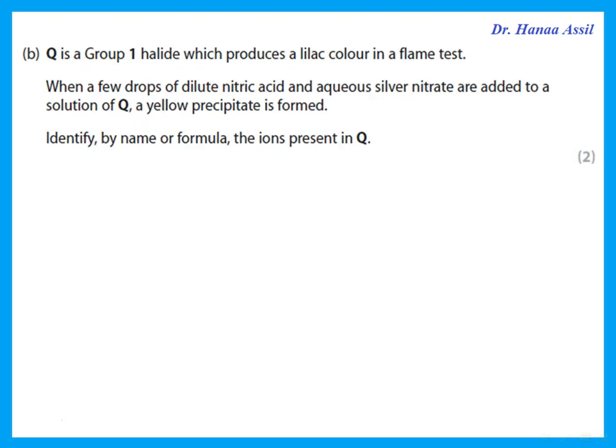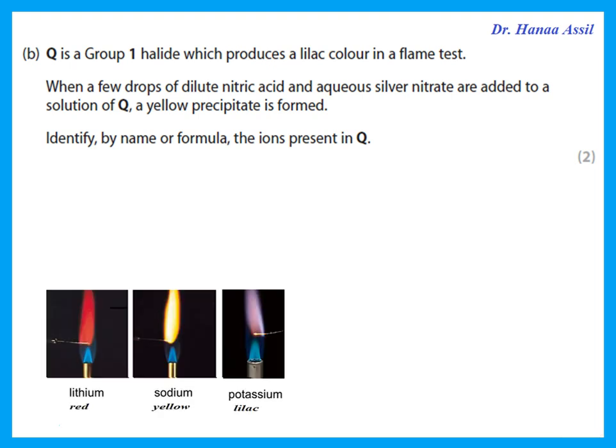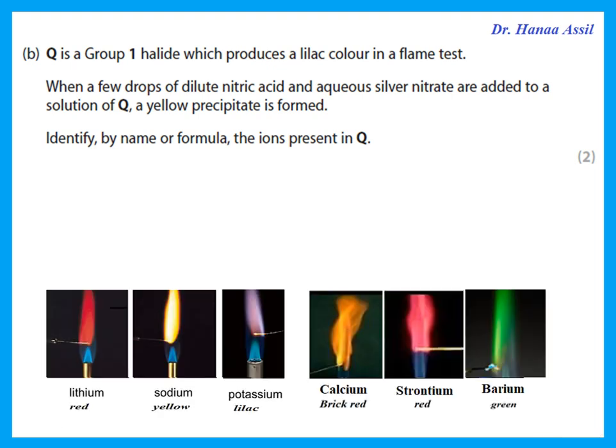Q is a group one halide which produces a lilac color in a flame test. Which group one metal ion produces lilac? Remember that lilac is produced by potassium ions. So that means I have K⁺, or potassium ions.